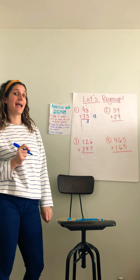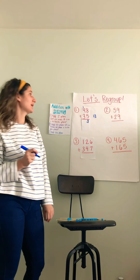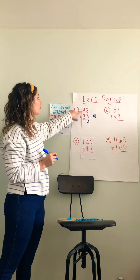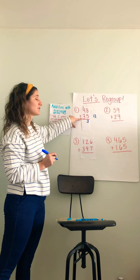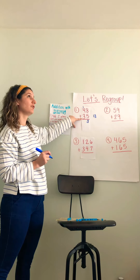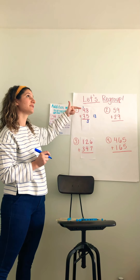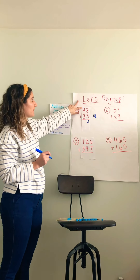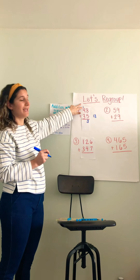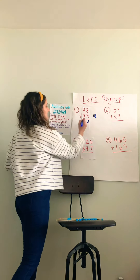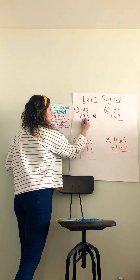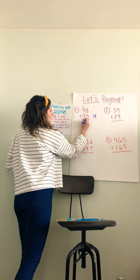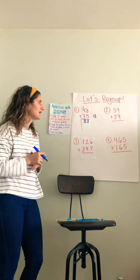Now I'm ready to add my tens place. I have four plus three — four, five, six, seven. Don't forget the one more that we carried up — eight. So our answer would be 83.